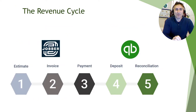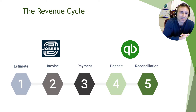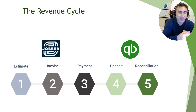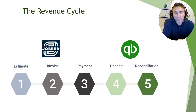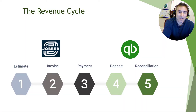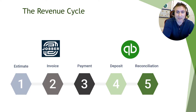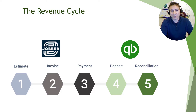Let's review what the revenue cycle is and what Jobber and QuickBooks each do. Typically, when you meet with a new client, you'll give them an estimate. If they accept, you'll do the work and provide them an invoice — that's when you've earned your money. Then they'll pay you either immediately or with some terms. You'll deposit the payment physically if there are checks, or it will be automated into your bank account, which is then reconciled for accuracy so your profit and loss, balance sheet, and other general ledger reports are accurate.